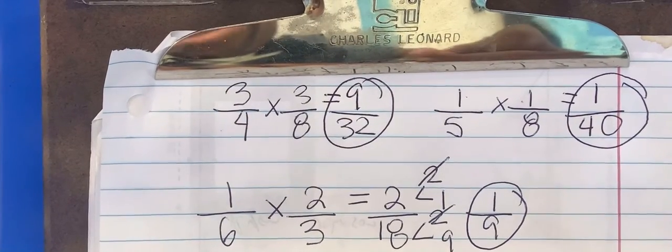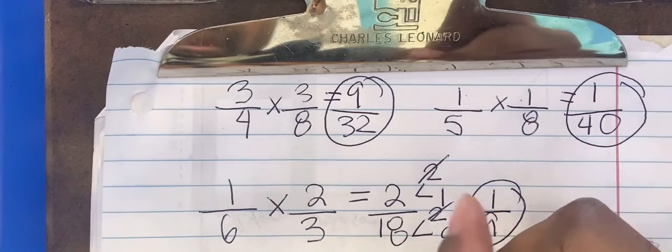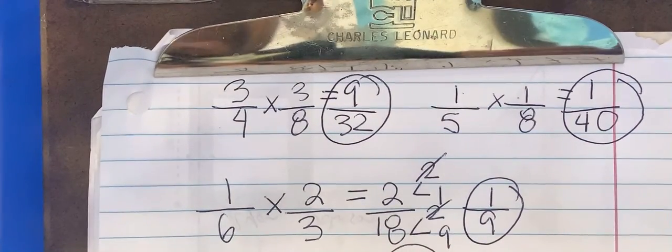There's no common factors between 6 and 35. So this would be fully simplified. Let's do another problem here.